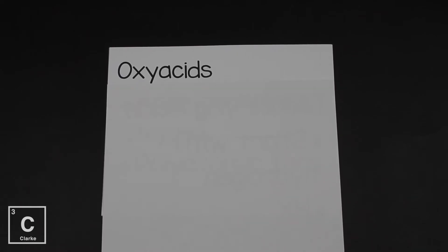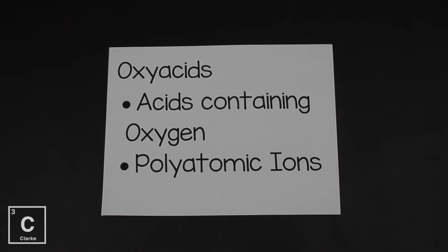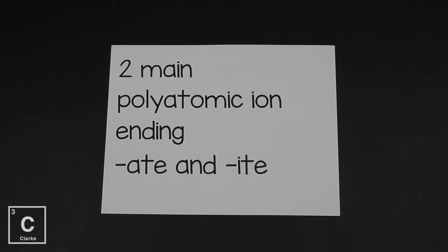So let's talk about oxy acids now. An oxy acid always contains oxygen. This oxygen is always present as part of a polyatomic ion. Now there's two main polyatomic ion endings. The polyatomic ions mostly end in ate, like phosphate, sulfate, carbonate. Or ite, nitrite, sulfite, phosphite.